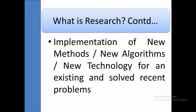Most researchers go for the next type of research: implementation of a new method, new algorithm, or new technology for an existing and already-solved recent problem. Here the problem is already solved — it is not new. What you have to do is implement a new method or algorithm so that the parameters in the existing problem can be improved. For example, if the efficiency attained so far is 80%, and by using a new method you can improve it to 85% or 90%, this is also considered research. This is what most research scholars are doing.